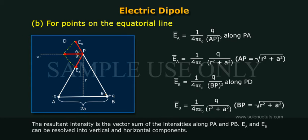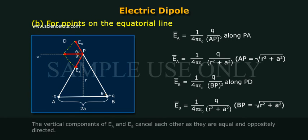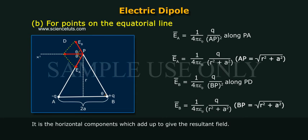The resultant intensity is the vector sum of the intensities along PA and PB. E_A and E_B can be resolved into vertical and horizontal components. The vertical components of E_A and E_B cancel each other as they are equal and oppositely directed. It is the horizontal components which add up to give the resultant field.